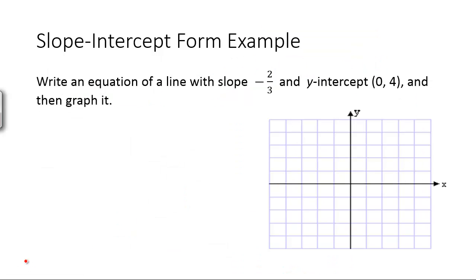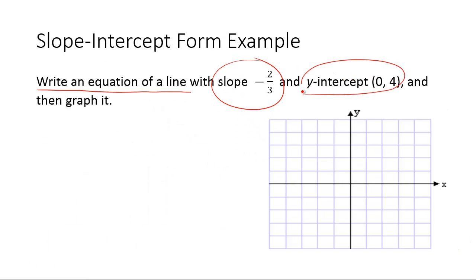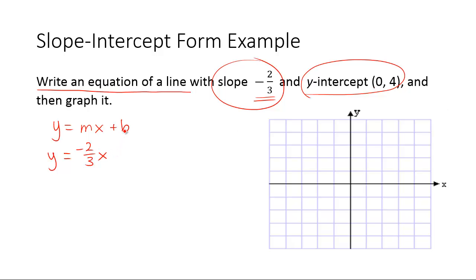Let's take a look at an example that uses slope-intercept form. They want us to write an equation of a line with a slope of negative two-thirds and a y-intercept of (0, 4). We know that the slope-intercept form is y equals mx plus b. Let's replace what we know: m is negative two-thirds, and our x and y stay as general points. We also know the y-intercept, so we plug in b as 4.